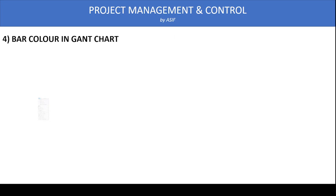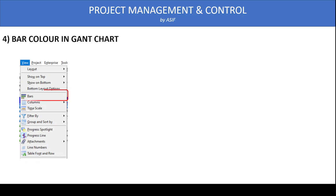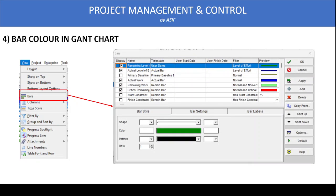In addition, we can modify the bar color in the Gantt chart itself. Go to View and select Bar. Once the Bar dialog box opens, on the left-hand side under the Display column, you will see checkboxes showing which bars are currently visible in your Gantt chart. Select any bar you want to modify.